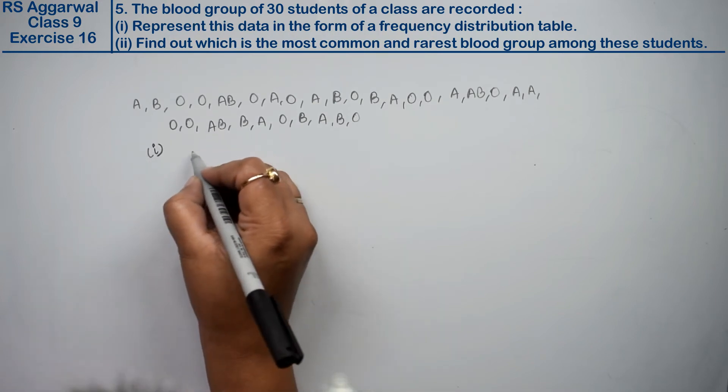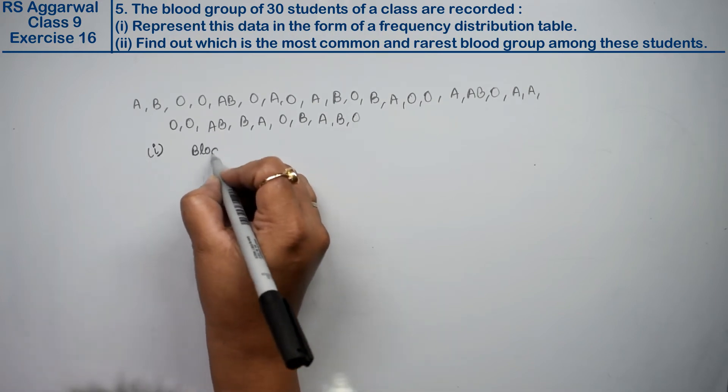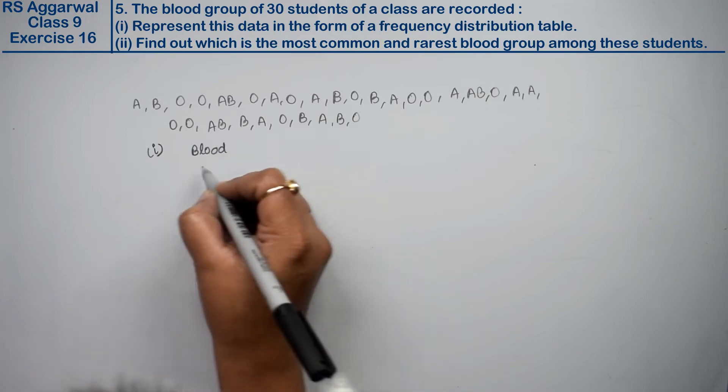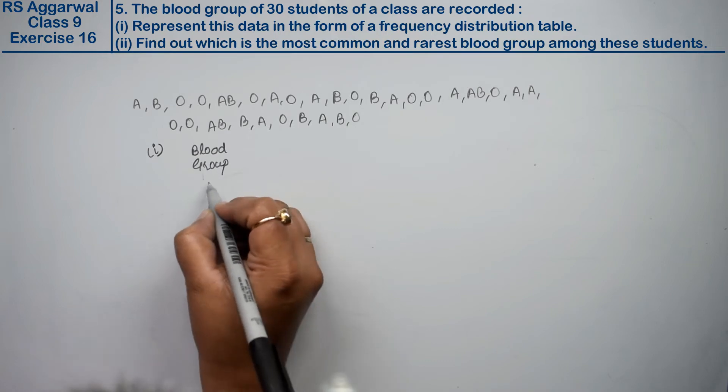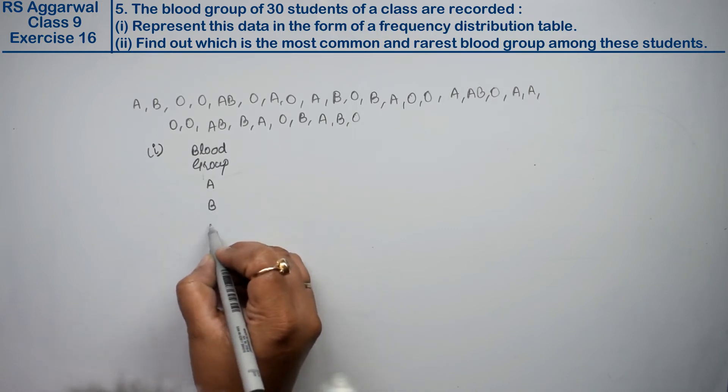First part, blood group. Blood group, which one is? A, B, O, AB.